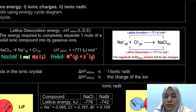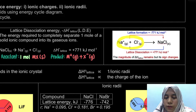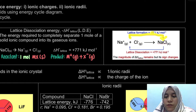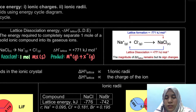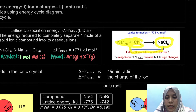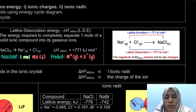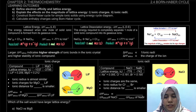Here is a diagram to illustrate: we have our gaseous ions reacting to form the ionic solid — this is lattice formation, with a value of negative 771 kJ/mol. The negative value indicates that energy is released. For lattice dissociation, we go from the ionic solid to form the gaseous ions. The magnitude is the same, 771, but the sign changes from negative to positive.